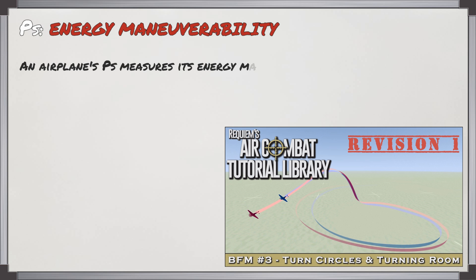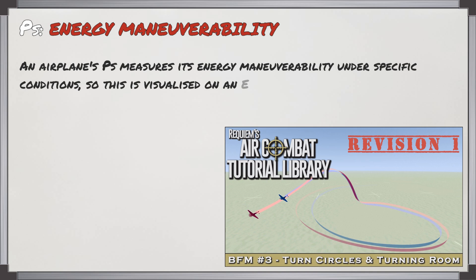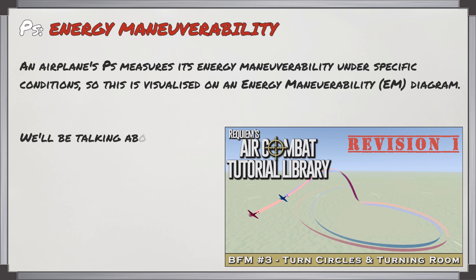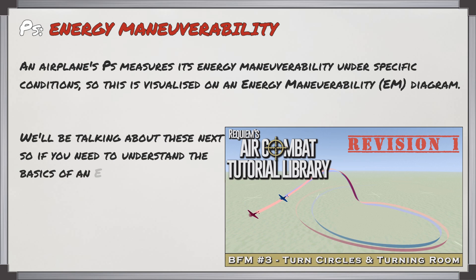The airplane's P-sub-S measures its energy maneuverability under specific conditions, and this is visualized on an energy maneuverability diagram. If you need to understand the basics of an EM diagram, you can go to my lesson for BFM number three, turn circles and turning room.